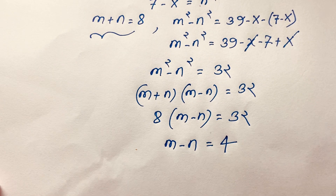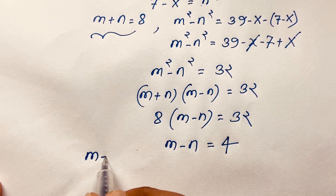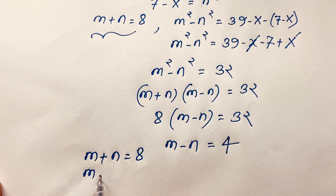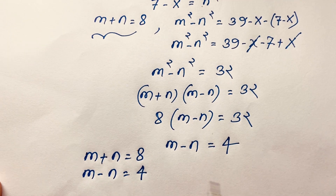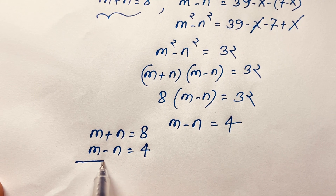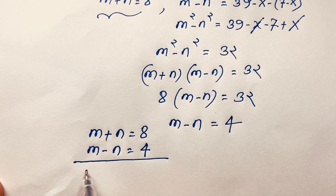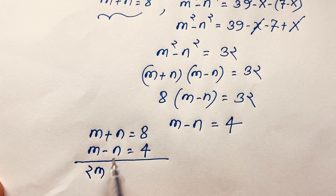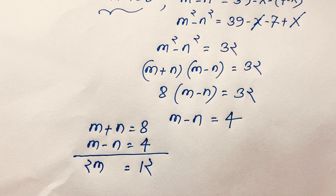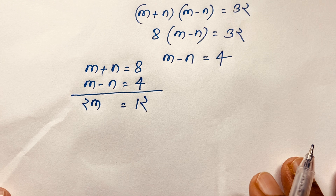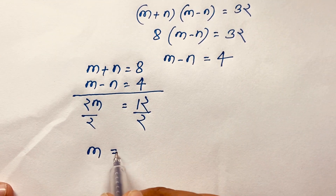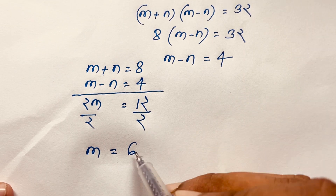Now we have two equations: m plus n equals 8, and m minus n equals 4. Adding both equations gives 2m equals 12. Dividing both sides by 2 gives m equals 6.